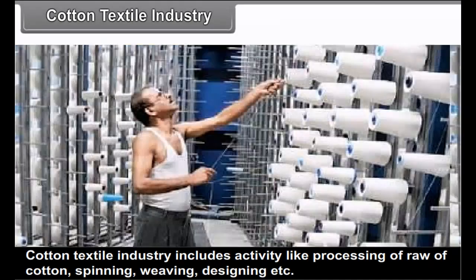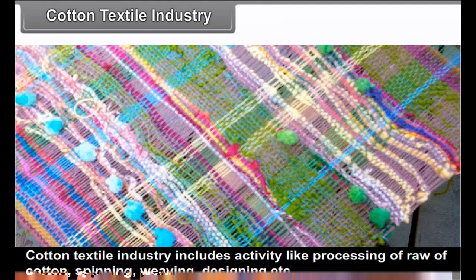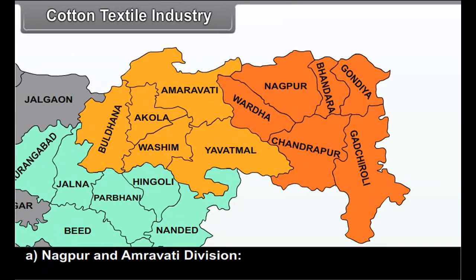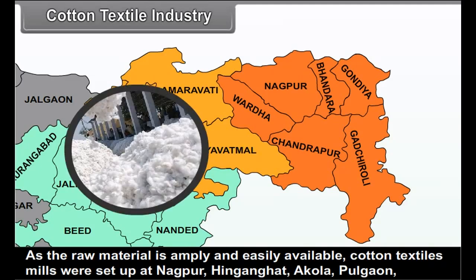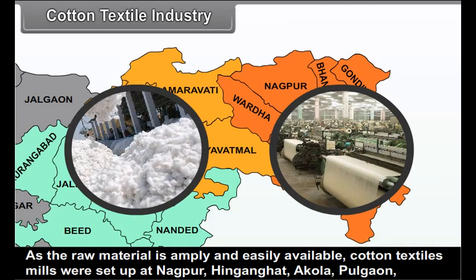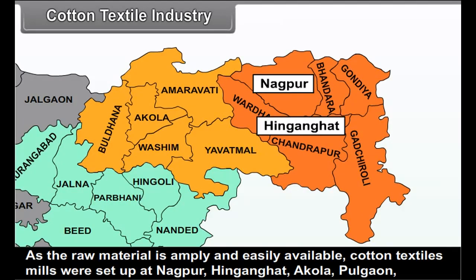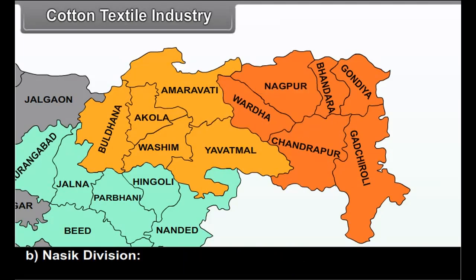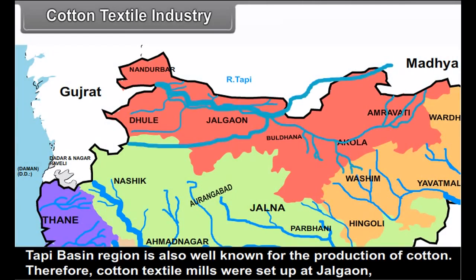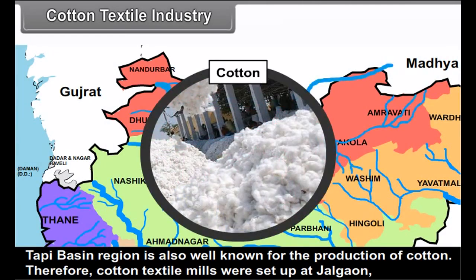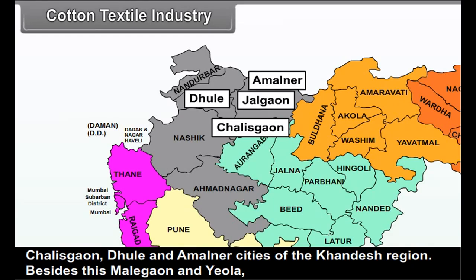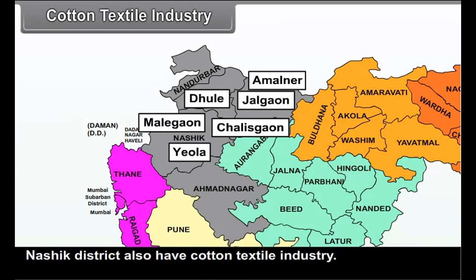Distribution of cotton textile industry: (a) Nagpur and Amravati division — as raw material is amply and easily available, cotton textile mills were set up at Nagpur, Hinganghat, Akola, Pulgaon, Badnera and Achalpur cities of the Vidarbha region. (b) Nasik division — the Tapi basin region is well known for cotton production, so mills were set up at Jalgaon, Chalisgaon, Dhule and Amalner cities of the Khandesh region. Malegaon and Yeola of Nasik district also have cotton textile industry.